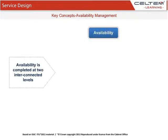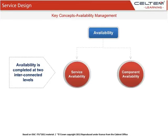Availability is completed at two interconnected levels: Service Availability and Component Availability. Service availability involves all aspects of service availability and unavailability, and the impact of component availability or the potential impact of component unavailability on service availability. Component Availability involves all aspects of component availability and unavailability.